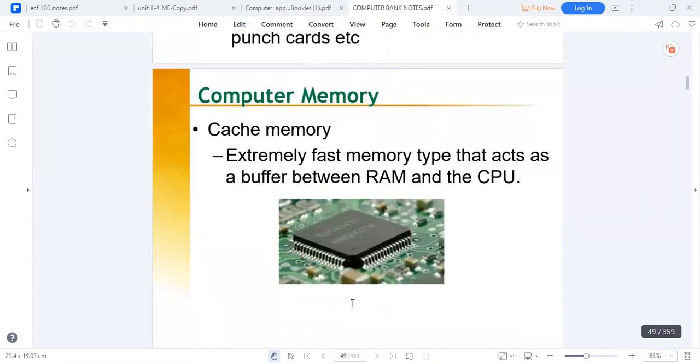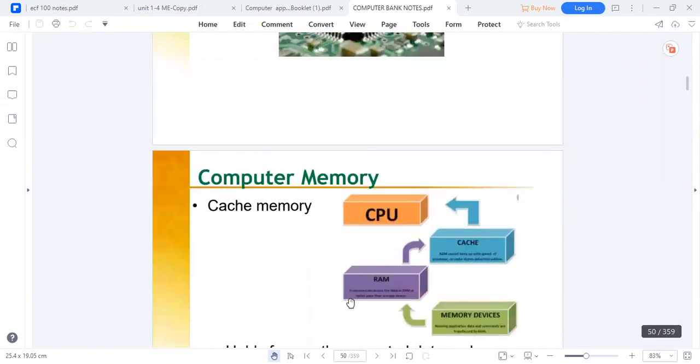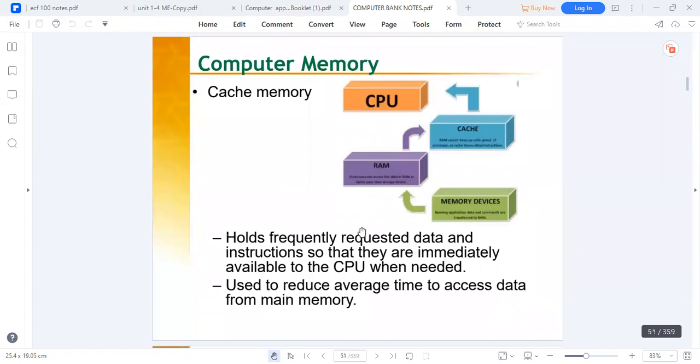We also have cache memory, which is an extremely fast type of memory that acts as a buffer between the RAM and the CPU. This is how the cache memory operates.